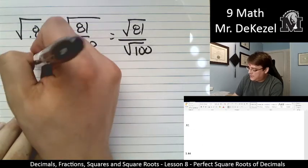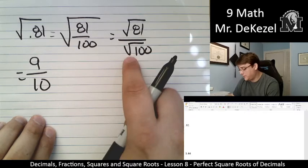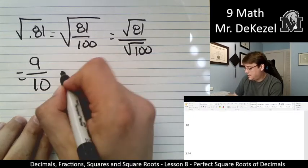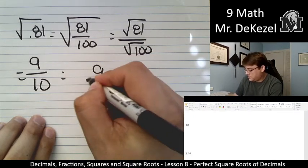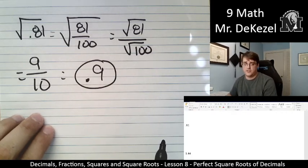So that would be 9 out of 10, right? The root of 81 is 9. The root of 100 is 10. And this is, again, an easy one to put into a decimal. 0.9. So the root of 0.81 is 0.9.